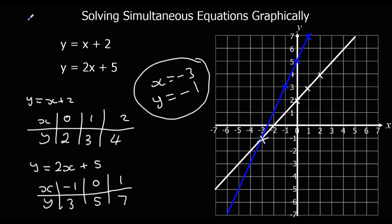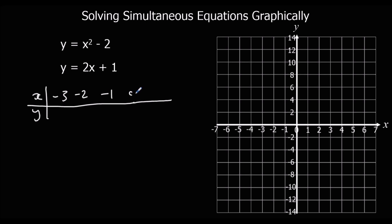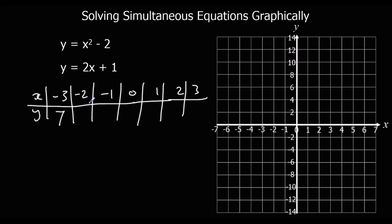Here's a different example — we've got a quadratic and a linear. For the linear we need three points because it's a straight line, but for the quadratic we'll need more points, going from minus 3 to plus 3. Minus 3 squared is 9, take 2 is 7. Minus 2 squared is 4, take 2 is 2. Minus 1 squared is 1, take 2 is minus 1. 0 minus 2 is minus 2. Then 1 squared minus 2 is minus 1. 4 minus 2 is 2. 9 minus 2 is 7.